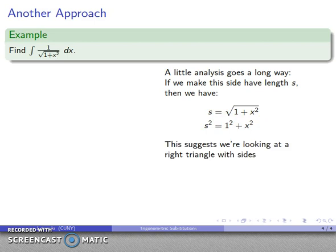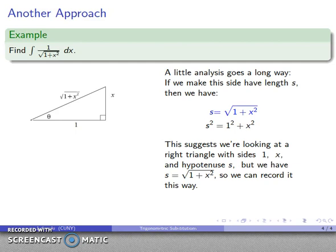In particular it looks like we're talking about a right triangle with sides 1, side x, and third side is going to be hypotenuse s, but rather than writing s as a new variable, I'll substitute in what that is, square root 1 plus x squared.